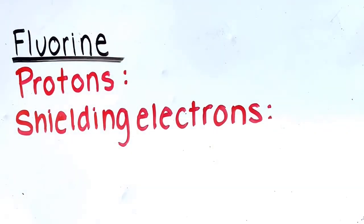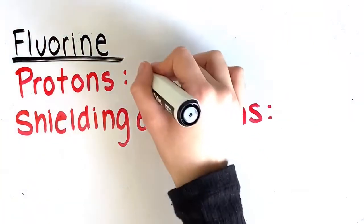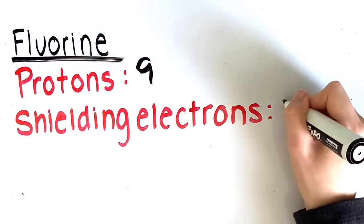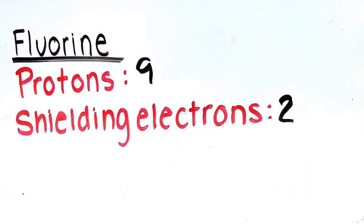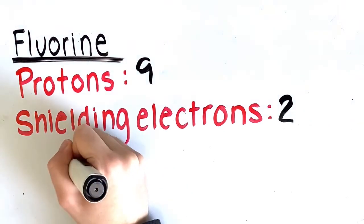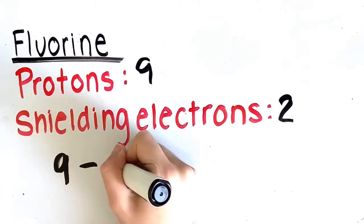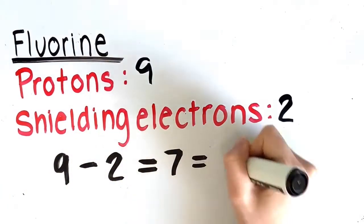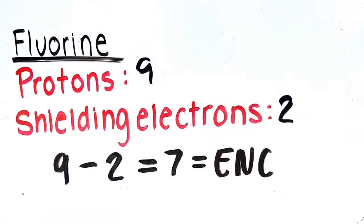Let's look at the effective nuclear charge of fluorine. We know that its number of protons is nine because that is its atomic number, and we know that it has two shielding electrons because it is found in group seven. Being in group seven means that it has seven valence electrons, and nine minus seven gives us our shielding electrons, which is two. To find its effective nuclear charge, we subtract two from nine and that gives us seven. Therefore, the effective nuclear charge of fluorine is seven.